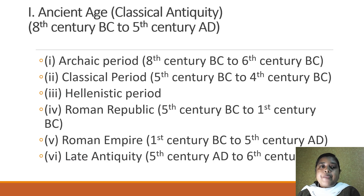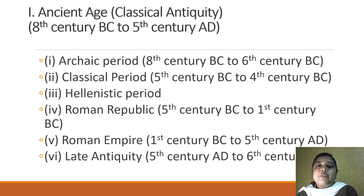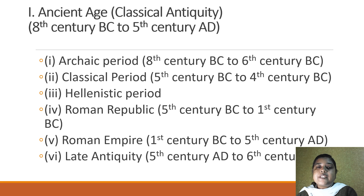The ancient age, or the period of classical antiquity, was from the 8th century BC to the 5th century AD. It was divided into a number of sub-periods: the archaic period from the 8th century BC to the 6th century BC; the classical period, 5th to 4th century BC; followed by the Hellenistic period; then the Roman Republic, 5th century BC to 1st century BC; the Roman Empire, 1st century BC to 5th century AD; and finally the period of late antiquity in the 5th century AD.